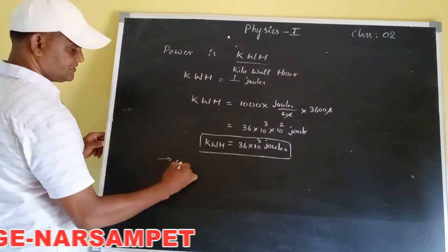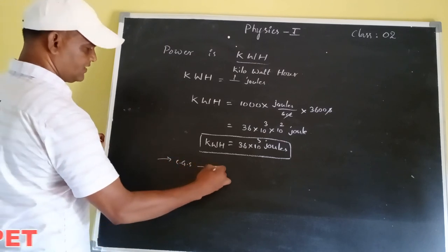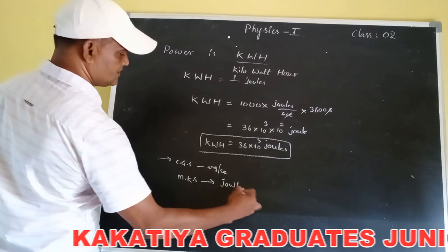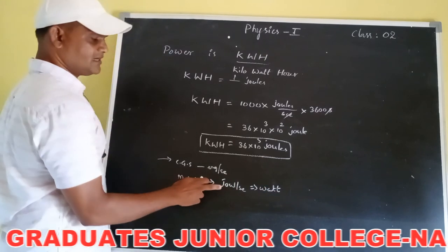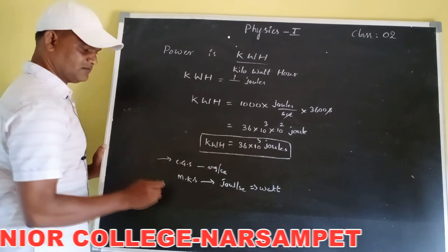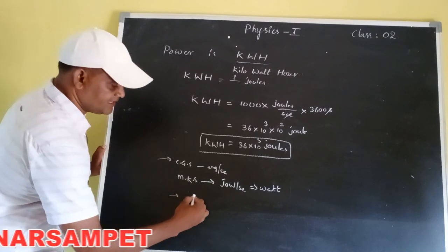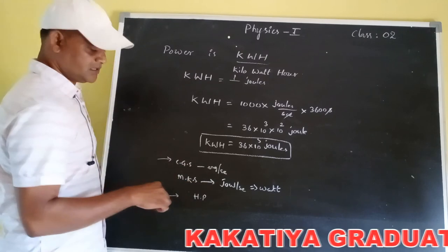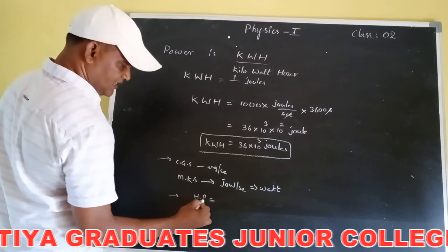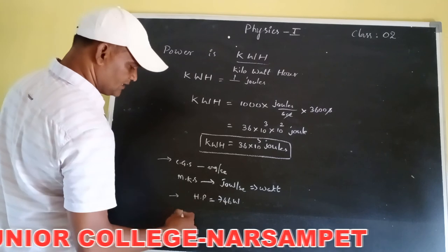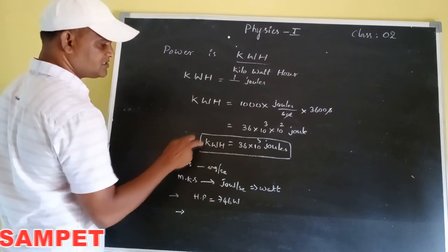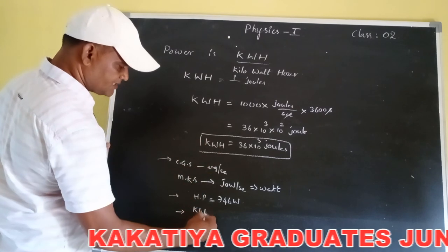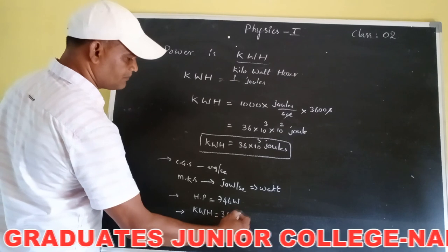To summarize all units of power: the CGS unit is erg per second; the MKS unit is joule per second, also called watt — where one watt is work done at the rate of one joule per second. Another unit is horsepower, used for automobiles and motors, equal to 746 watts. Another unit is kilowatt-hour, used for electrical power, equal to 36 into 10 power 5 joules.